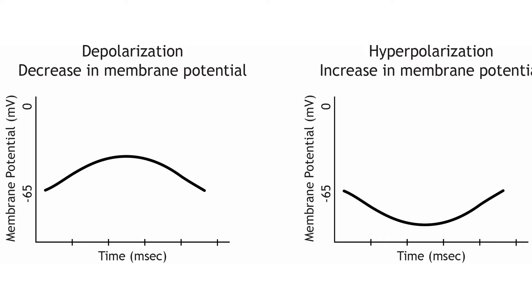This means that when a neuron's membrane potential moves from rest, which is typically around negative 65 millivolts, towards zero millivolts and becomes more positive, this is a decrease in membrane potential. Since the membrane potential is the difference in electrical charge between the inside and outside of the cell, that difference decreases as the cell's membrane potential moves toward zero millivolts.